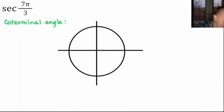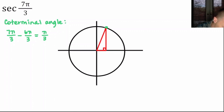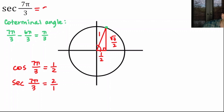Secant of 7π/3. The coterminal angle: 7π/3 is bigger than 2π since 2π = 6π/3, so subtract 2π — that's minus 6π/3 — leaving 1π/3, so coterminal angle is π/3. Draw a reference triangle, label the sides: hypotenuse 1, it's a 30-60-90, short leg 1/2, long leg √3/2, reference angle 60 degrees. For secant, first find cosine of 7π/3 = adjacent over hypotenuse = 1/2. Therefore secant of 7π/3 = 2/1 = 2.